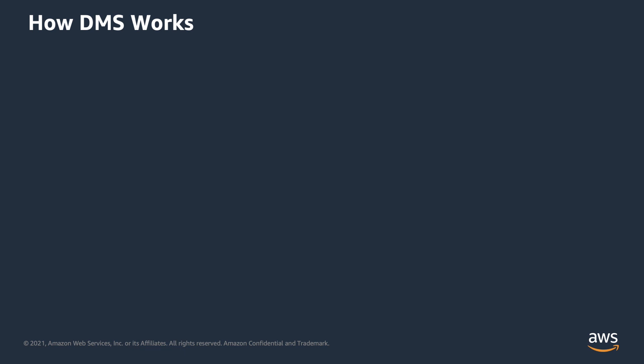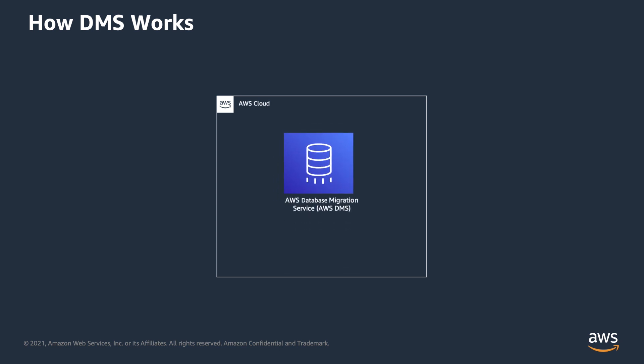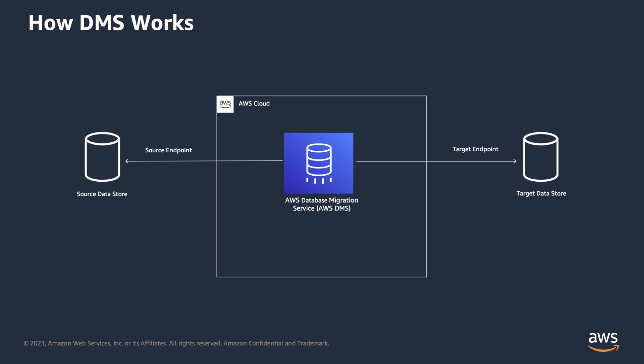Before moving to the actual configuration, let's first understand different DMS components and how DMS works. At a high level, while configuring AWS DMS, we follow three simple steps. First, we create a replication instance. Then, we create source and target endpoints — this is nothing but your connection information about your data engines. And once your endpoints are ready and connections are successful, we create one or more tasks to migrate data between the source and target data engine.